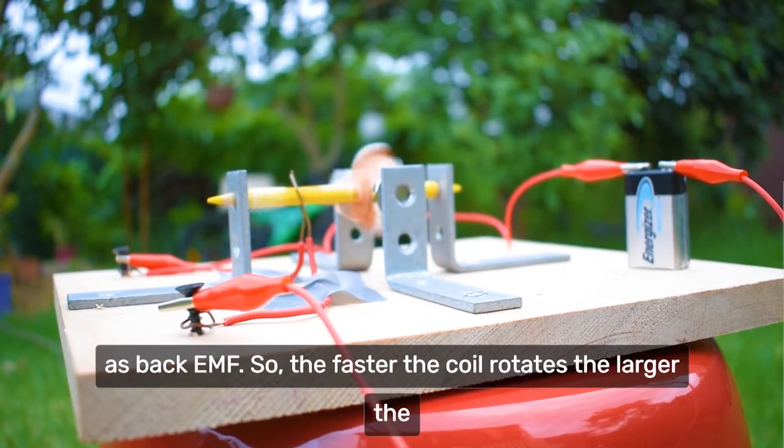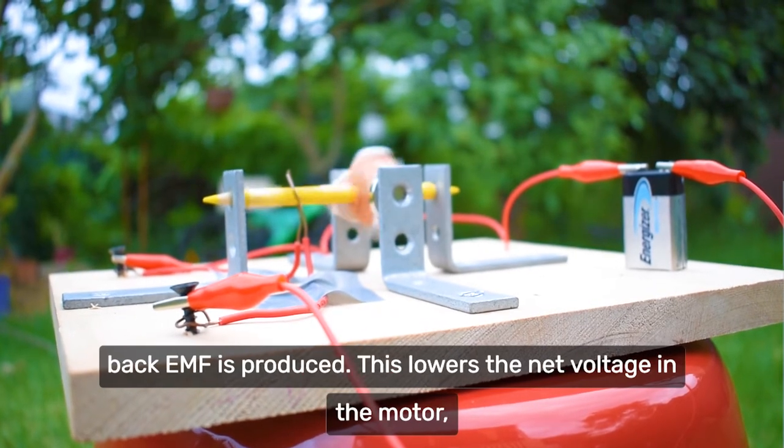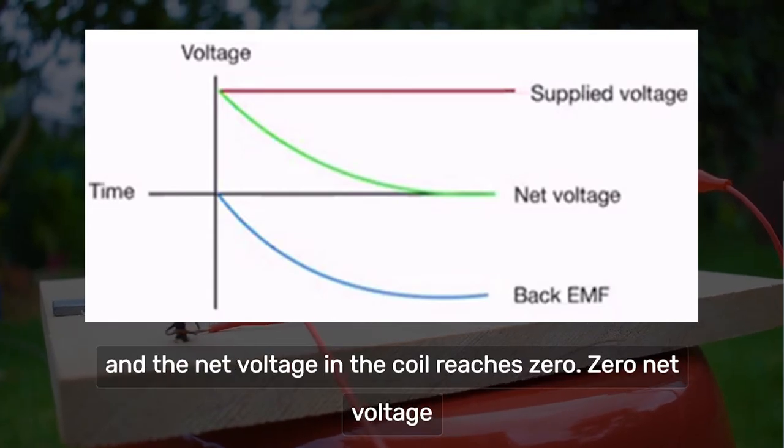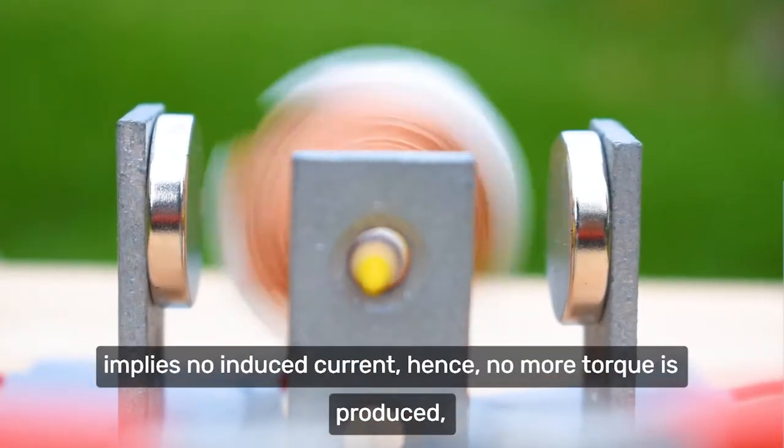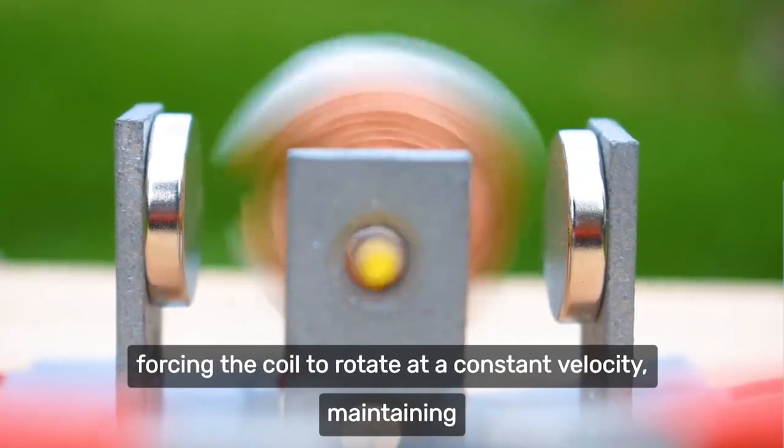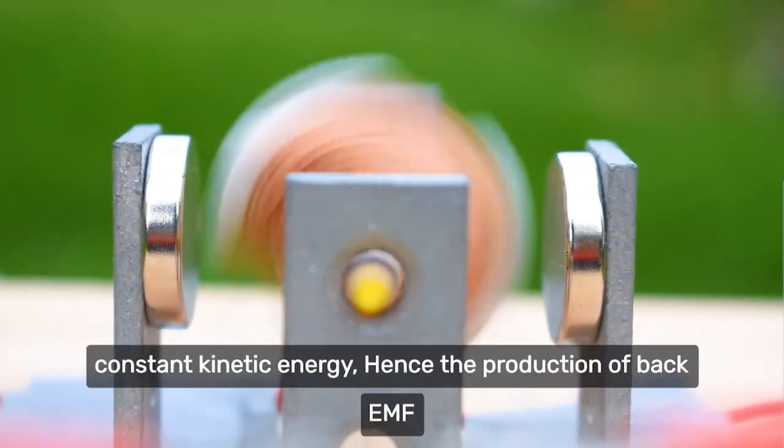So the faster the coil rotates, the larger the back EMF is produced. This lowers the net voltage in the motor, such that eventually, the back EMF cancels out with the forward EMF, and the net voltage in the coil reaches zero. Zero net voltage implies no induced current, hence no torque is produced, forcing the coil to rotate at a constant velocity, maintaining constant kinetic energy.